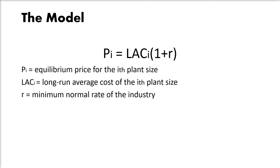Given these assumptions, the limit price or entry-preventing price is set by the largest firm in the oligopoly industry. Since the cost structures of the firms differ, the limit price would be above the LAC of the smallest firm, but it should cover not only its LAC but also the minimum normal rate of profit set by the industry. This price must be acceptable to all established firms in the oligopoly group. The equilibrium price is written as: PI = LACI × (1 + R), where PI is the equilibrium price for the ith plant size, LACI is the long-run average cost of the ith plant size, and R is the minimum normal rate of profit, which Sylos assumes as five percent.